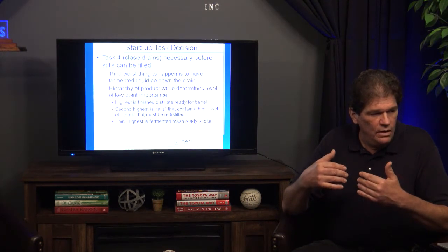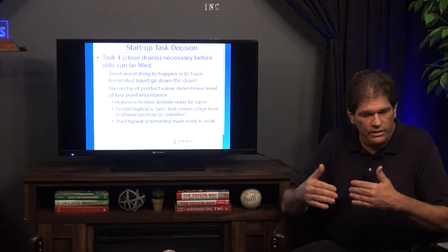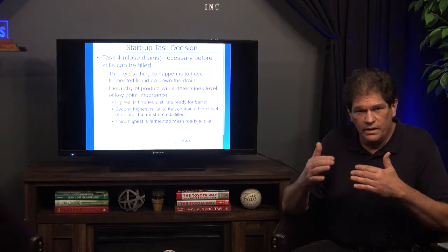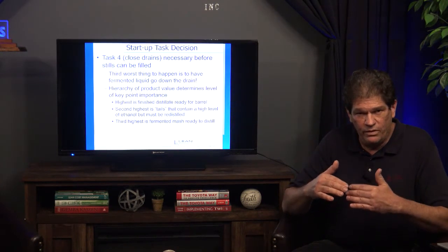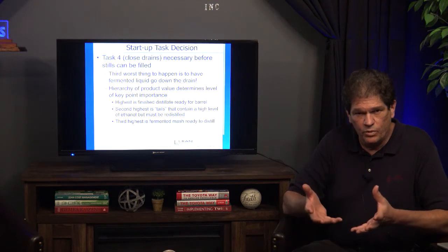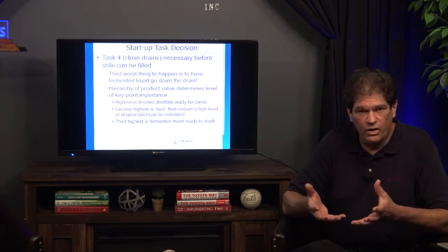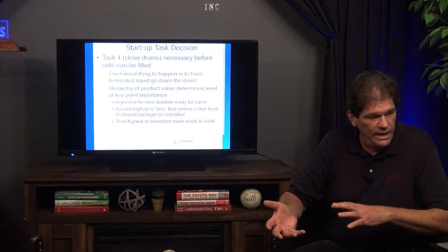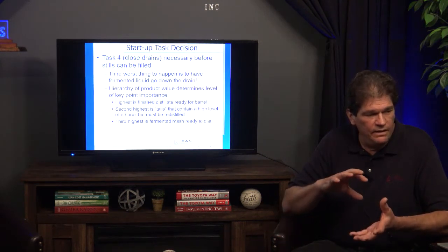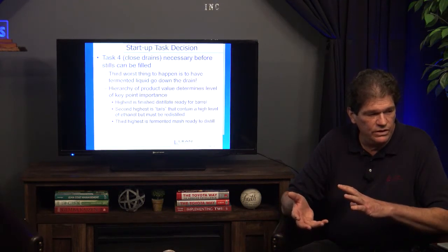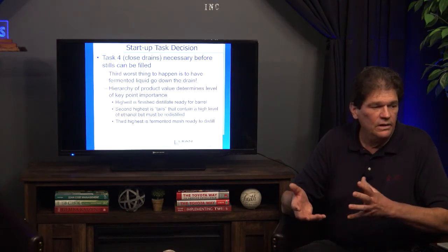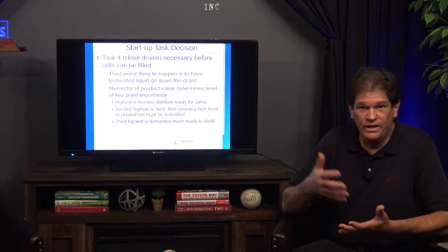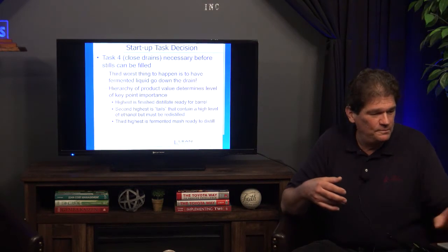The hierarchy is: finished distillate is the most valuable, then the tails — the portion at the end of the run with higher alcohol content that we can recycle — and then the fermented mash that goes into the still. We worked hard to get that fermented mash and we definitely don't want it going down the drain.